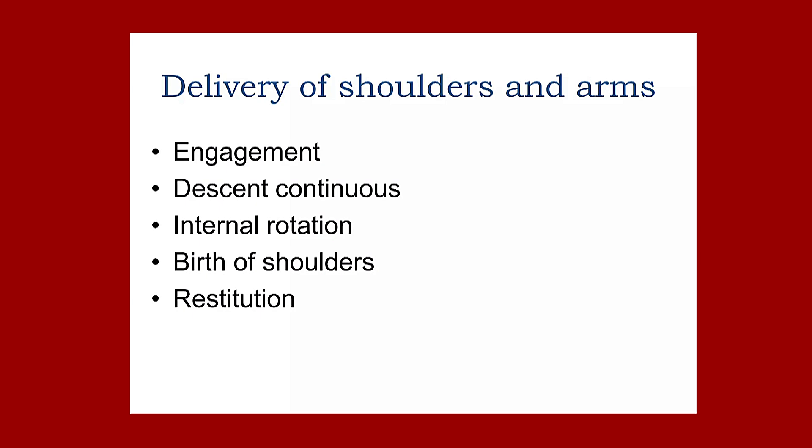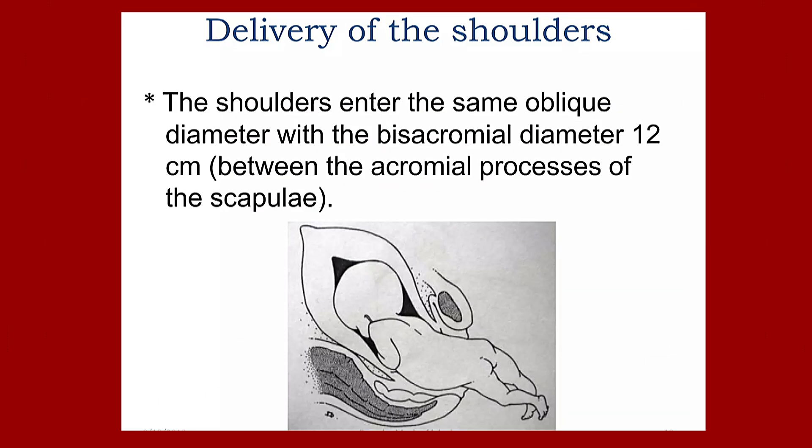Delivery of the shoulders and arms occurs by the following movements: engagement, descent, internal rotation, birth of the shoulders, and restitution. The shoulders enter the same oblique diameter with the biacromial diameter of 12 centimeters, measured between the acromial processes of the scapula.